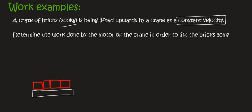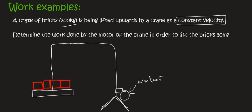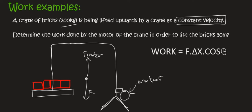So here's our crate with the bricks, and that crate is busy being pulled upwards by a crane, and that crane has some type of motor. So we know that the formula for work is the following, and so we need to know what's happening here. I'm just going to do a free body diagram that's being lifted upwards by the motor, and then you've got the force of gravity acting downwards.